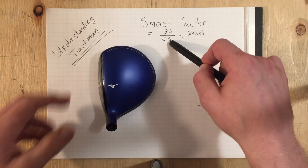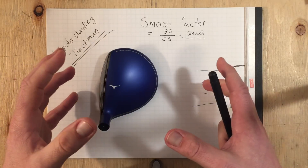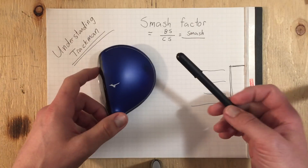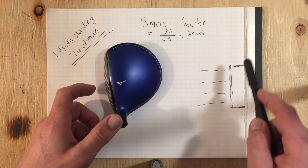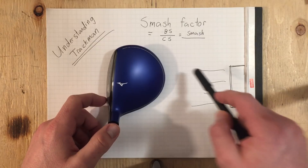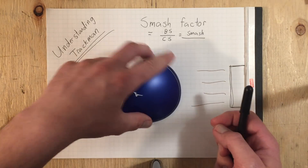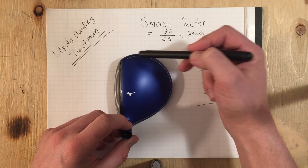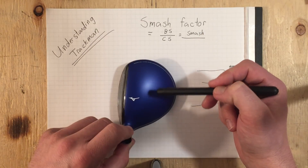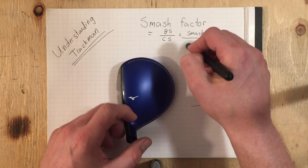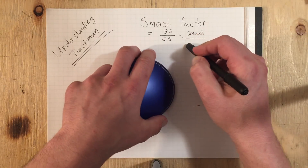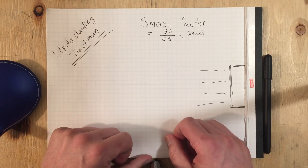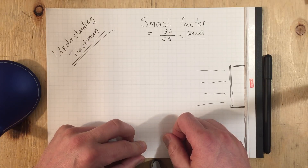This is really important for people using TrackMan to understand. It's physics — it's what happens at impact, and this creates ball flight laws. Physics has never changed; we just get better understandings of it as we go. When you get odd low smash factor numbers, it's because different parts of the object traveling through space are moving at a faster rate. If you have questions like this or anything else, please let me know and I'll do my best to answer them. Thanks so much for watching.